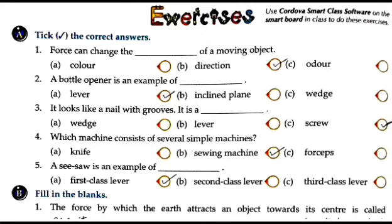Exercise E - tick the correct answers. MCQ 1: Force can change the blank of a moving object. Force can change what of a moving object? Color, direction, or order? The answer is direction. Direction means which way an object is moving.